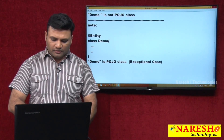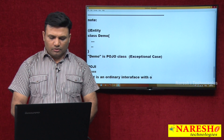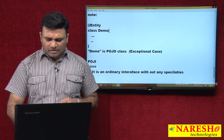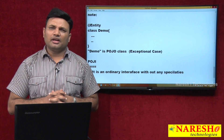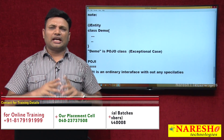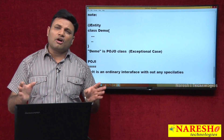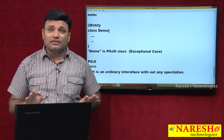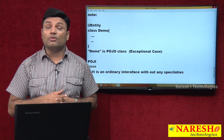Now let us analyze what is POJI — Plain Old Java Interface. It is an ordinary interface without any specialities. The technical definition: the interface that is not extending from any technology API interfaces or framework API interfaces is called a POJI. Though the interface is a component of a certain technology application or framework application, if that interface does not extend from that technology-specific or framework-specific interfaces, it is called a POJI.